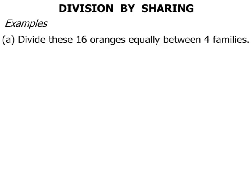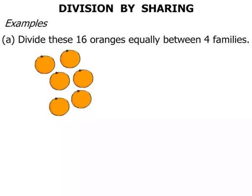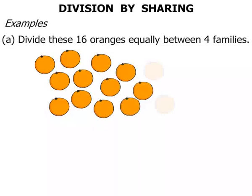We are asked to divide these 16 oranges equally between 4 families. So 2, 4, 6, 8, 10, 12, 14, 16 oranges.